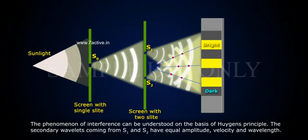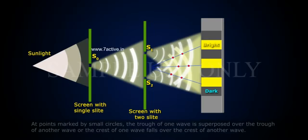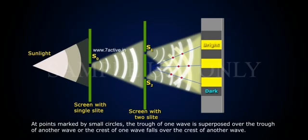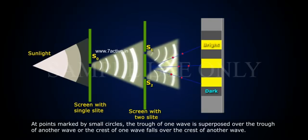The phenomenon of interference can be understood on the basis of Huygens' principle. The secondary wavelets coming from S1 and S2 have equal amplitude, velocity and wavelength. In the figure, the continuous circular arcs represent the regions of wave crest. The dotted circular arcs represent regions of wave trough. At points marked by small circles, the trough of one wave is superposed over the trough of another wave.